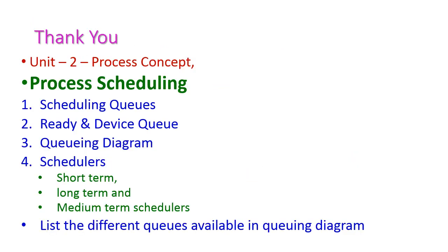In this lecture we have seen process scheduling, scheduling queues — the different types of queues that is ready queue and device queue — then the queuing diagram, and then the schedulers. We have three different types of schedulers: short-term scheduler, long-term scheduler, and medium-term scheduler. Now it is question time. Students, please list the different queues which are available in our queuing diagram example — how many queues are there and what are they — in the comment box. If you have any doubts, write them in the comment box. Thank you.